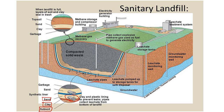Above that sand-and-leachate-pipe layer, you have a synthetic liner. This synthetic liner can be meters thick — often about two meters of rubber — and it's the primary barrier preventing leachate from getting into the soil and groundwater. If that fails, you have your backup layer of clay. Above the synthetic liner, you have another layer of sand with leachate collection pipes. Sand is highly permeable to water, so water goes through the sand but stops at the synthetic liner or clay. Then above that, you start adding garbage.